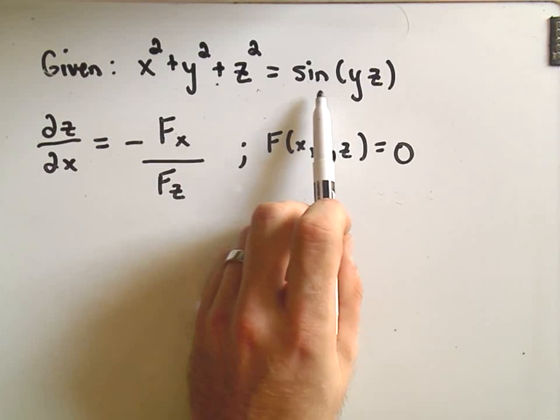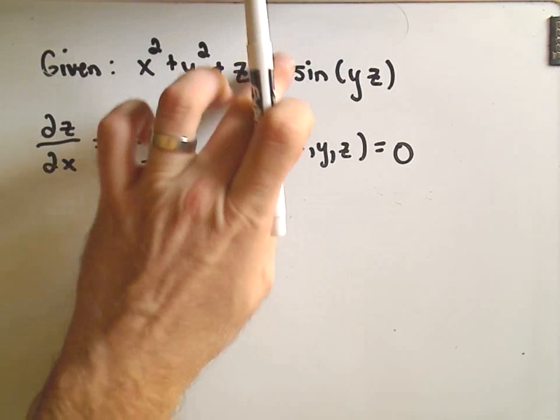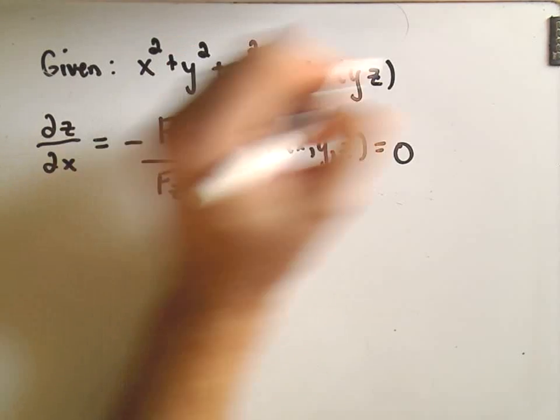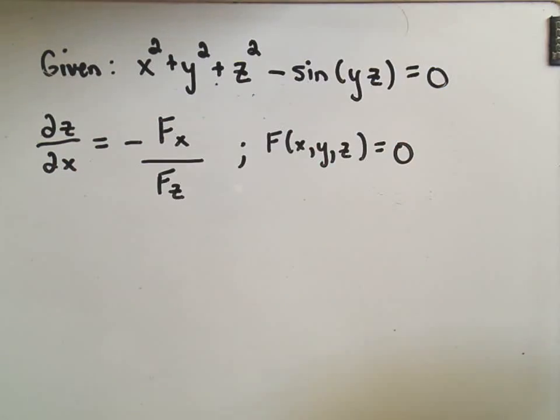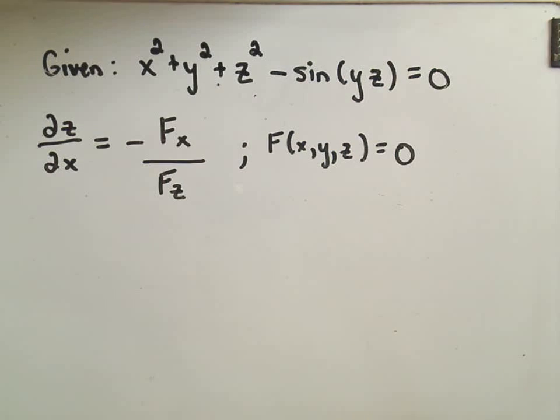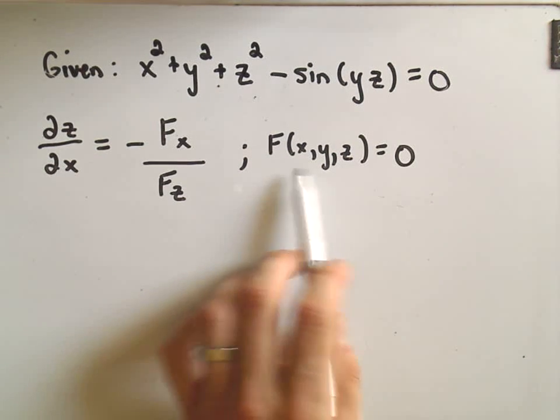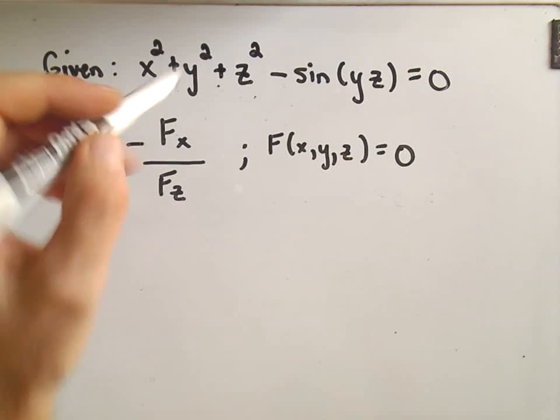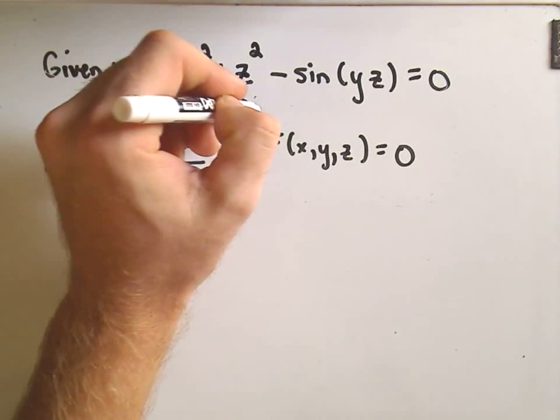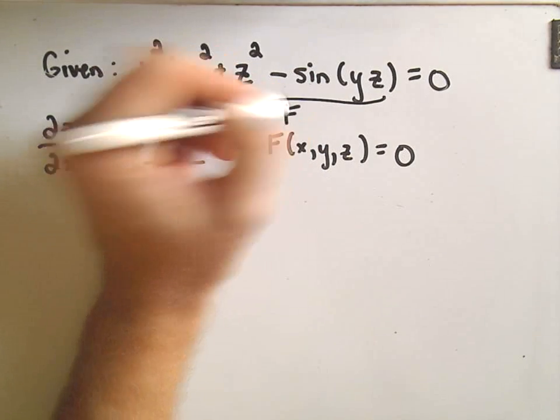Well I could do that by subtracting sine of yz from both sides. Alright, ta-da, now we have our function defined in this proper form. It's been set equal to zero. So again everything that's on the left side, that's our function f.